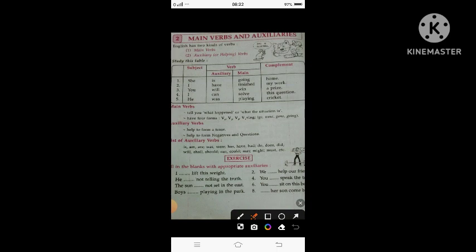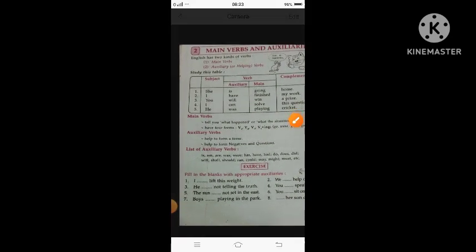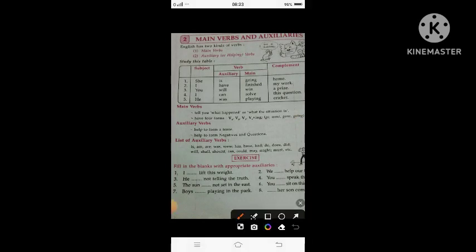Look at this example: 'He was playing cricket.' Here, 'he' is the subject, 'was' is the auxiliary, 'playing' is the main verb, and 'cricket' is the complement. The sentence becomes: He was playing cricket.